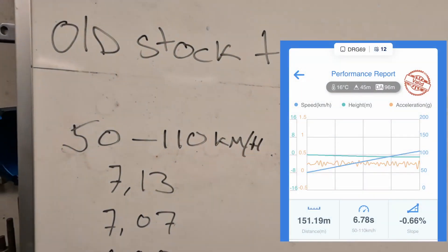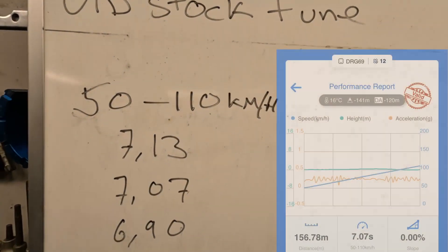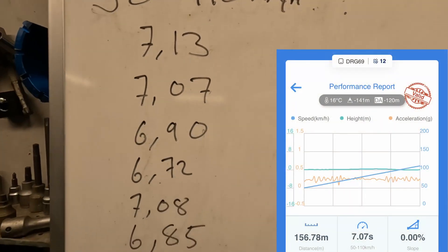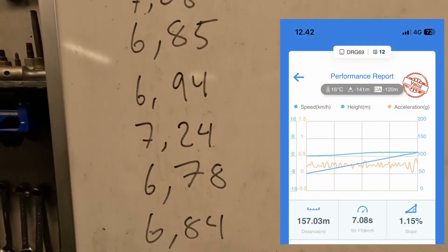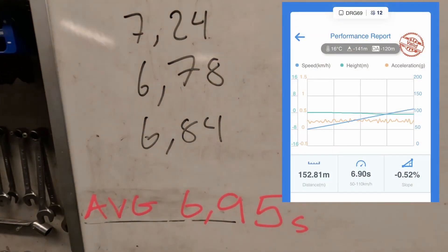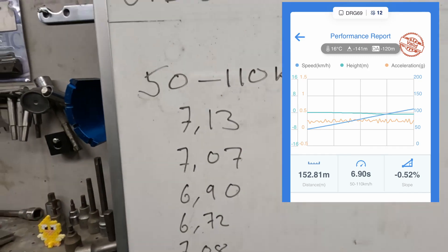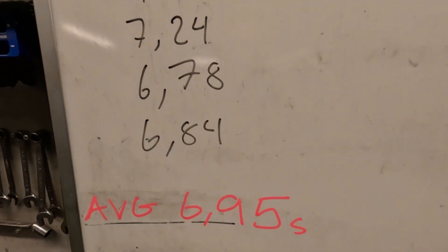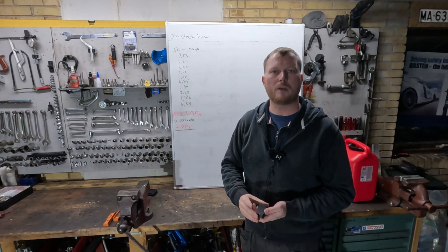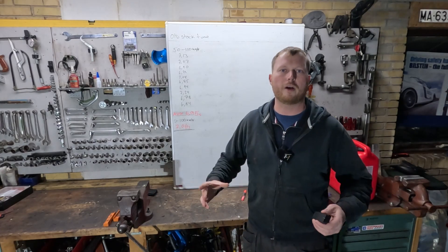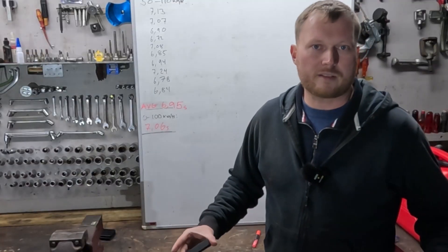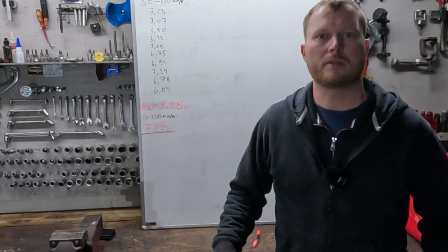Speaking of this little draggy device here, I have already recorded 10 runs and the average for these 10 runs here, 50 to 110 kilometers per hour, is 6.95 seconds. This is the number we're going to try and improve upon by simply updating this free and easy DME software update. So let's just do that, really just update it and see what happens.